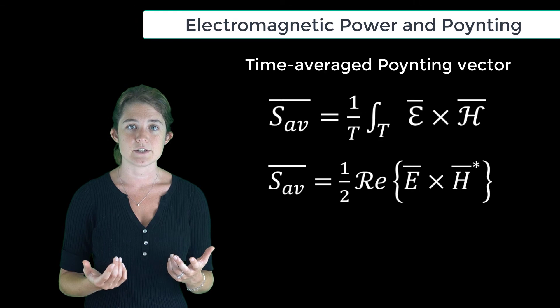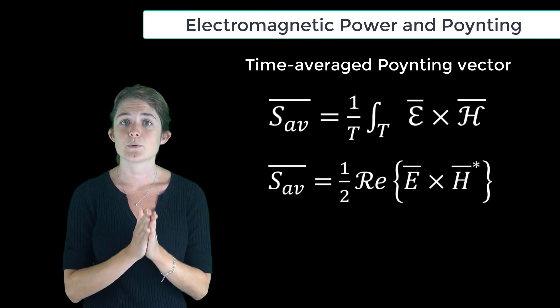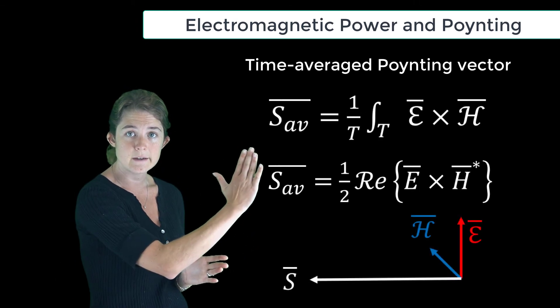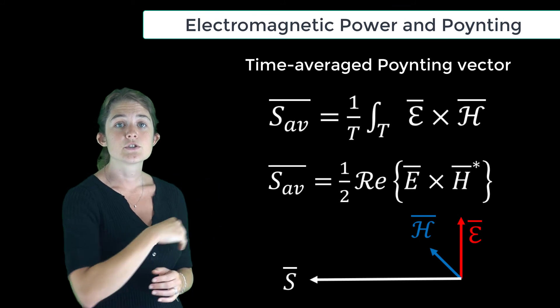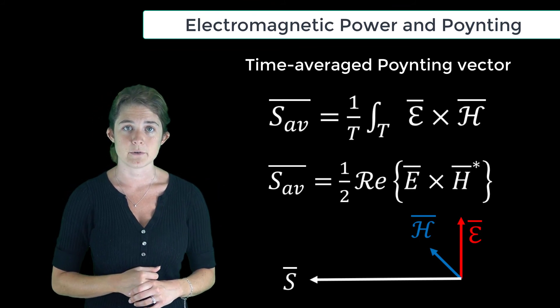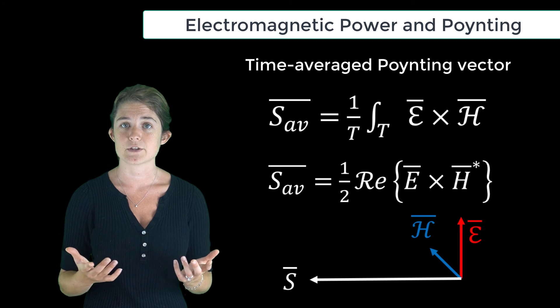Note also that E cross H equals S translates to a right-handed triad E, H, S, so the right-hand rule can be used to find the direction of power flow if the directions of E and H are known.